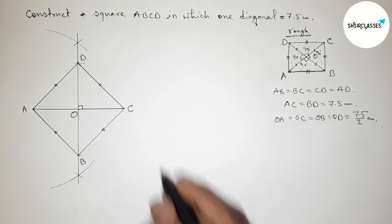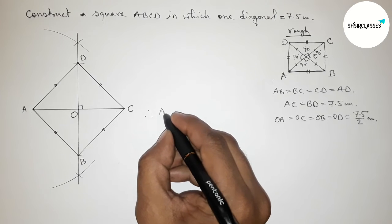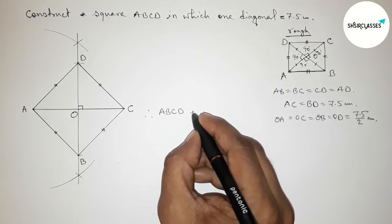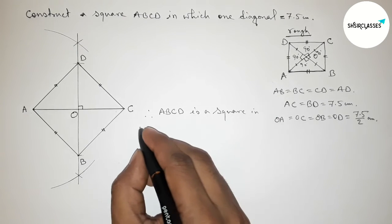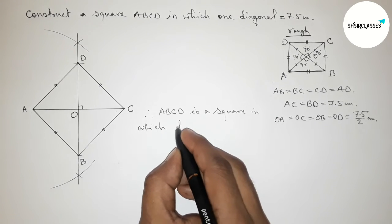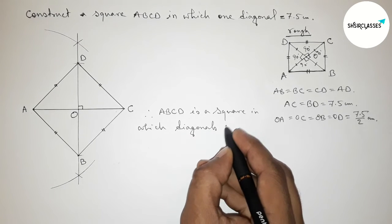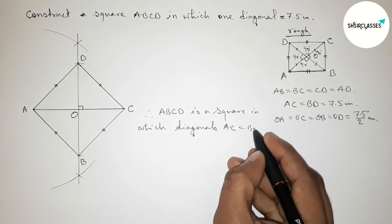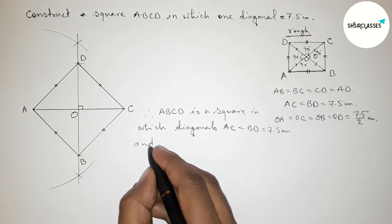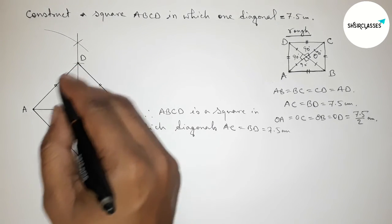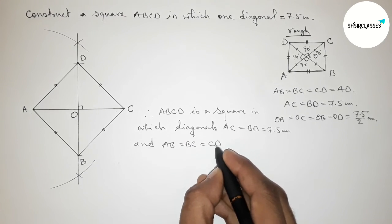Therefore, ABCD is a square in which the two diagonals AC equals BD equals 7.5 centimeters, and all sides are equal: AB equals BC equals CD equals DA.